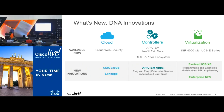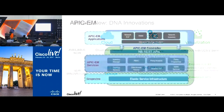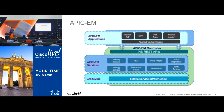To reiterate: with DNA you've got cloud, virtualization, and controllers. We're going to focus on controllers, specifically APIC-EM. Here's a simplified architecture of what that looks like. There's Network Plug-and-Play, which allows you to dynamically plug in routers and switches and they'll be dynamically configured — zero touch. Next is IWAN, intelligent routing — finding the most intelligent and fastest way to route packets.